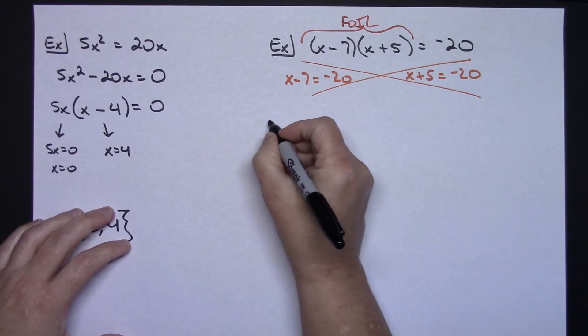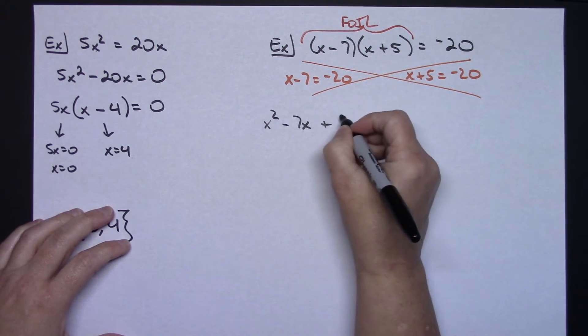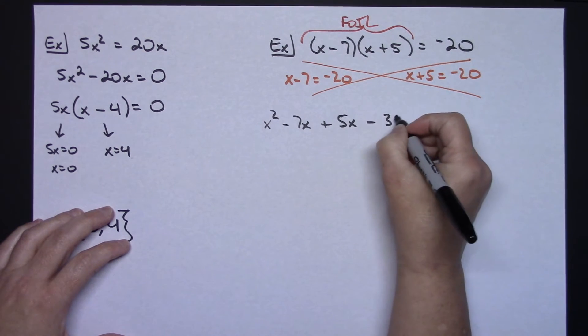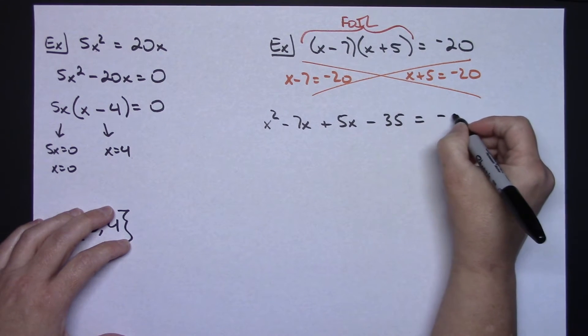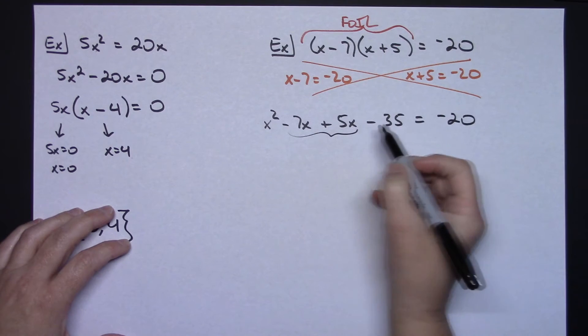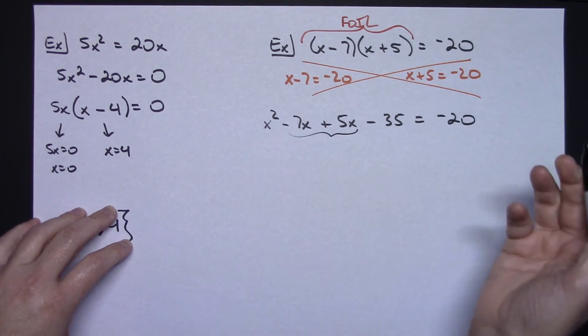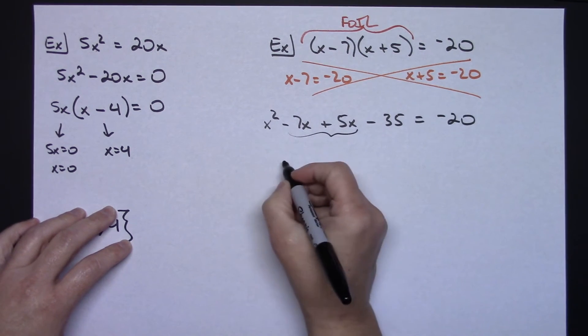When I FOIL this out, I'm going to have an x squared and then a minus 7x and a plus 5x and a minus 35. And then it's still equal to that negative 20 because I haven't done anything with it. Now, I can add like terms here and I can add 20 to both sides to get a 0 on that right-hand side, which is what I want.